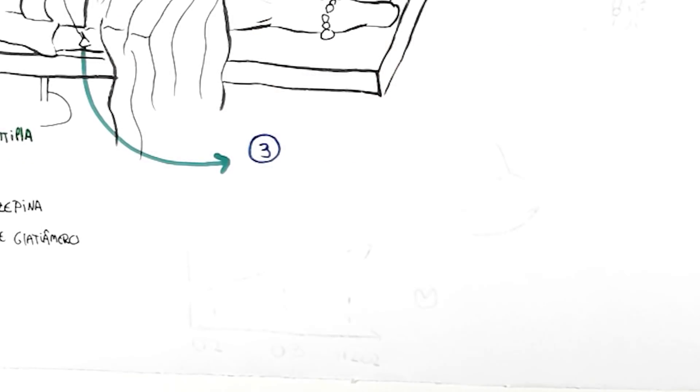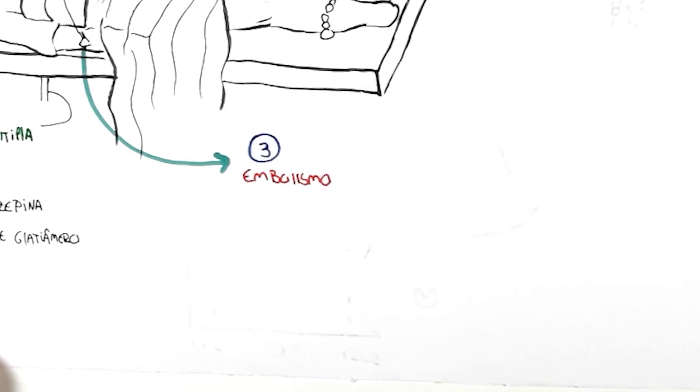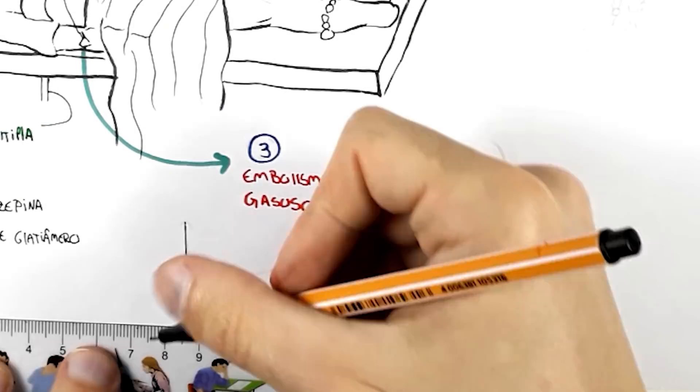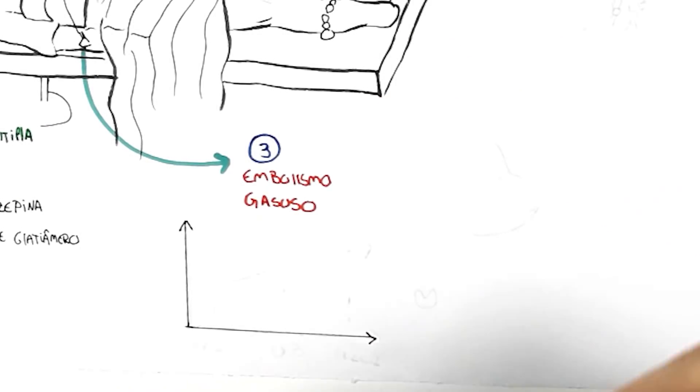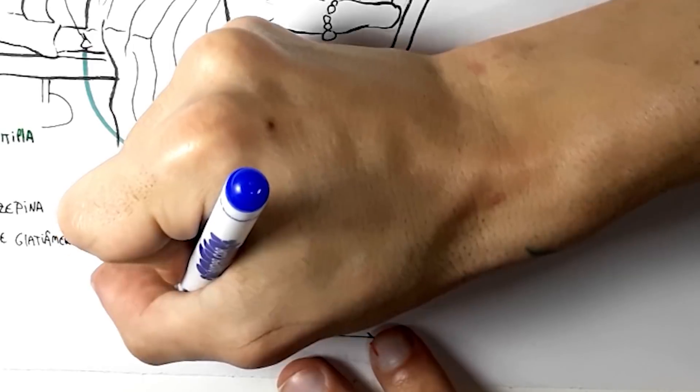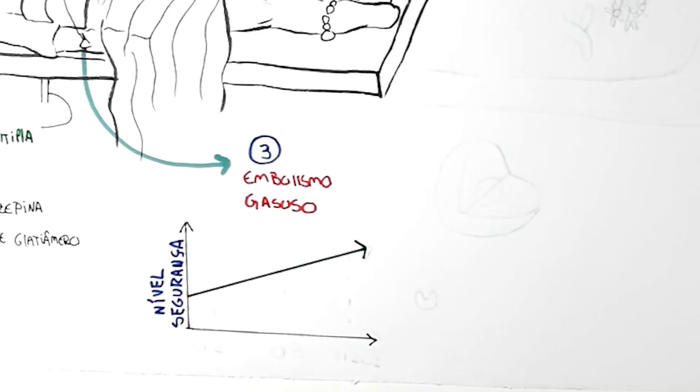Many people are afraid of using this substance because of the possibility of causing gas embolism. Embolism occurs when a considerable amount of gas enters the bloodstream and ends up obstructing blood flow. But let's see this representative graph in relation to safety. Oxygen in the blood has a certain safety that depends on quantity, so there is a possibility of causing embolism.